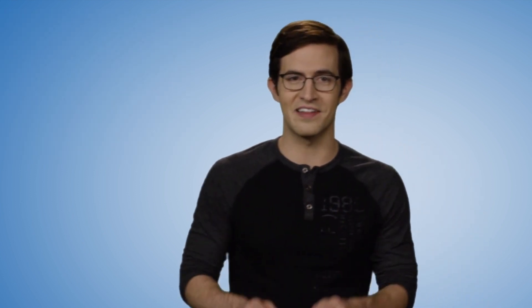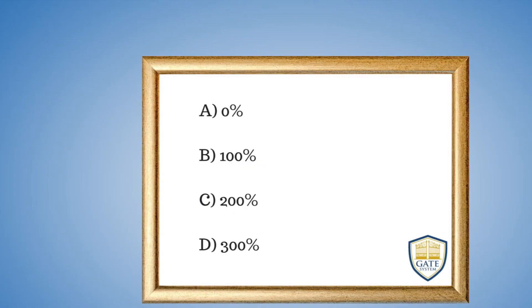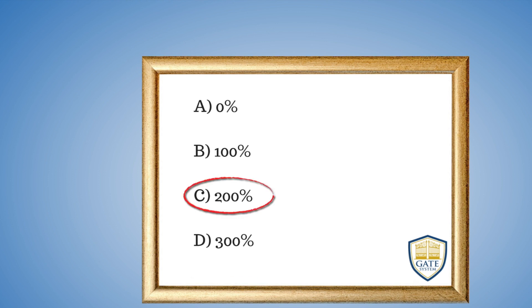Next up: percents. Percent is a special type of proportion meaning per 100 — so 29% means 29 per 100. If modern human brains are triple the size of Neanderthal brains, what is the percent increase in size? Is it 0%, 100%, 200%, or 300%? The answer is C — 200%. Tripling doesn't mean a 300% increase. If the brains stayed the same size, that would be 0%. Doubling would be a 100% increase, so tripling is a 200% increase.